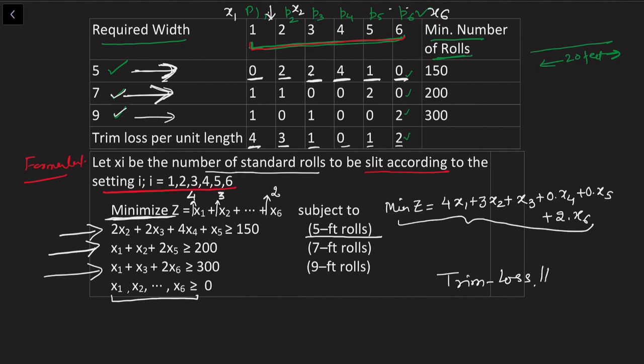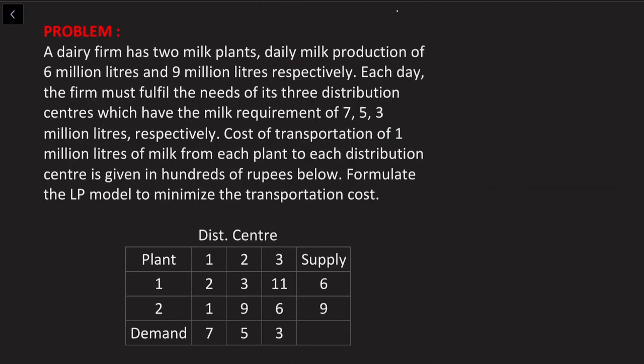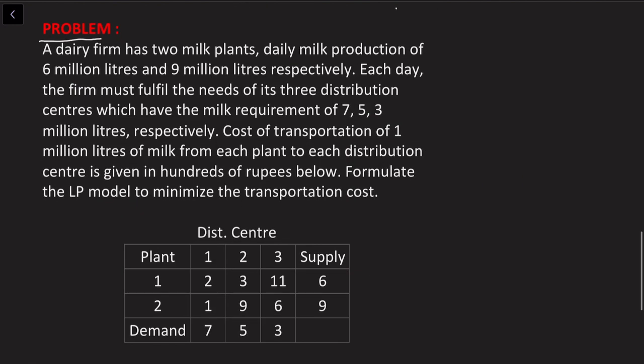These problems are also called trim loss problems. If the question asked only to minimize the number of standard rolls without concern for wastage, we could simply write the objective function as minimize Z equals the summation of all standard sub-rolls x1 through x6.